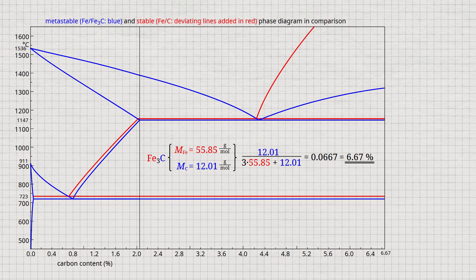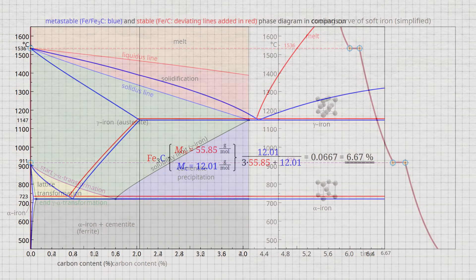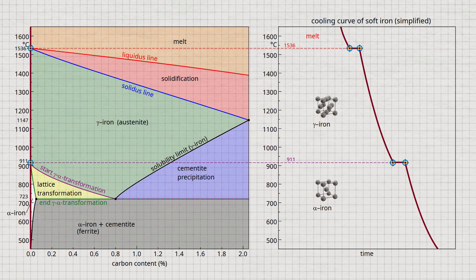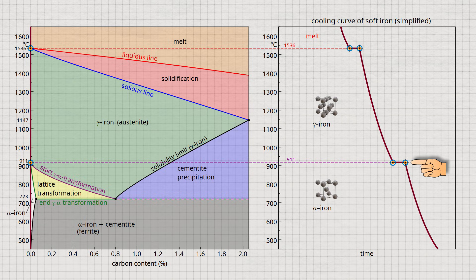Let us now return to the cooling curve of pure iron. As explained earlier, the first thermal arrest at 1536 degrees Celsius corresponds to solidification, and the thermal arrest at 911 degrees Celsius corresponds to the lattice transformation from a face-centered cubic lattice to a body-centered cubic lattice.